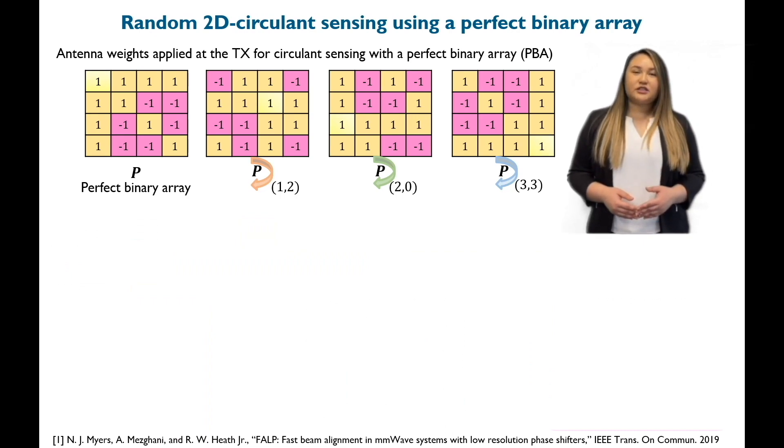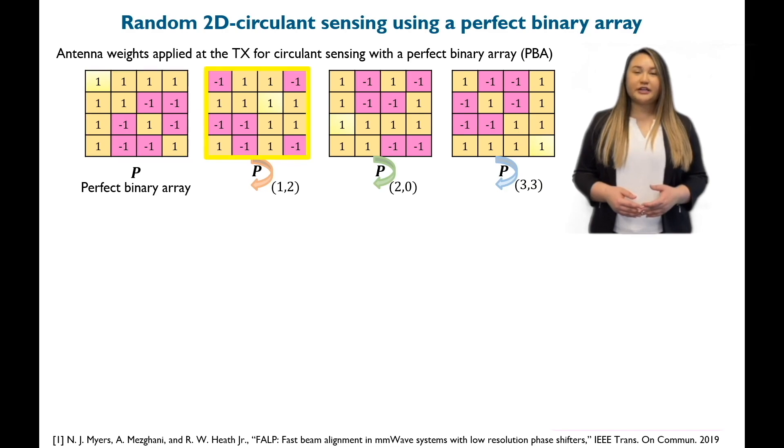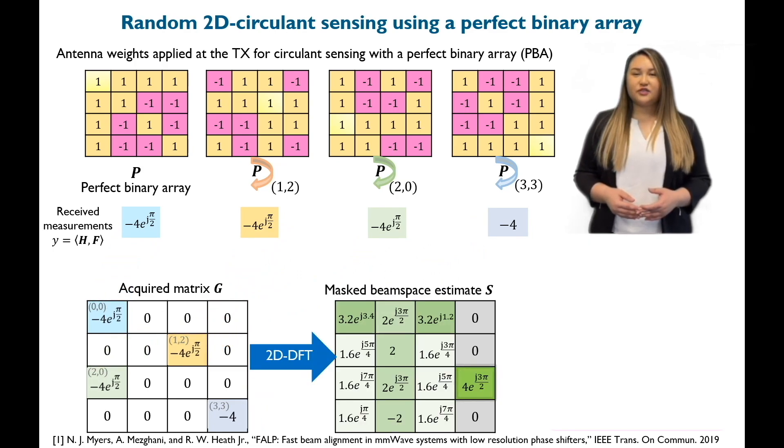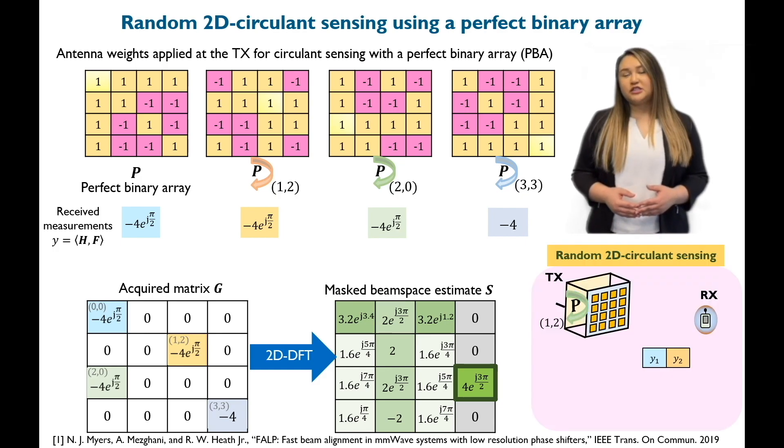A generalization of switching is a technique where the transmitter applies circulant shifts of a perfect binary array. In this method, the receiver constructs a matrix G that has the channel measurements at the circulant shift location. Then, the coordinate where the 2D DFT of G achieves its maximum gives an estimate of the best beam index. A summary of this procedure is shown here.